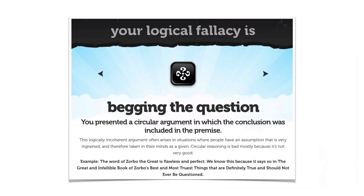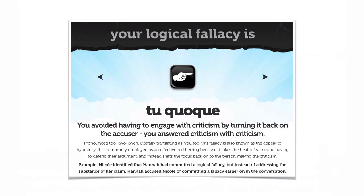Here's the Begging the Question Fallacy, which is a form of circular argument. And here's the Tu Quoque, kind of like trying to turn the tables — "Yeah, but what about?"